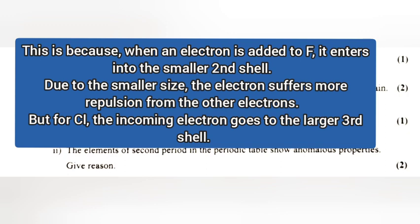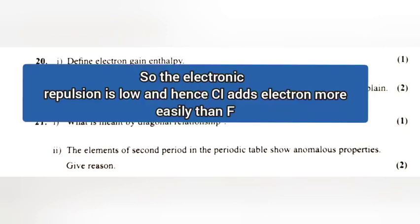Question 20.2: Chlorine has a higher negative value of electron gain enthalpy than fluorine. Explain. Answer: This is because when an electron is added to fluorine, it enters into the smaller second shell. Due to the smaller size, the electron suffers more repulsion from other electrons.